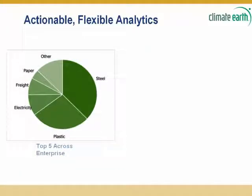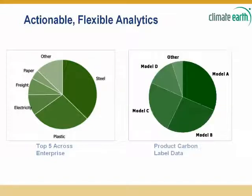Then to move on to look at what analytics are actionable and flexible, we probably want to look deeper into the bill of materials and into the financials to determine what specific materials are the major contributors to the carbon footprint. In this case it was steel, plastic, electricity use, freight, and paper across the organization. But organizations are not accustomed to directly managing, for example, steel coming in the door. So we may want to take a deeper cut and look at the product-level carbon footprint.